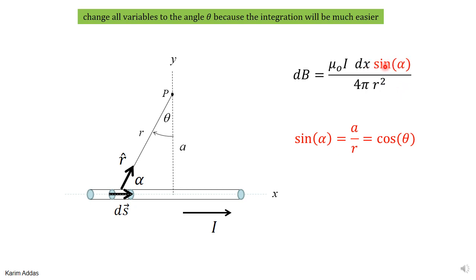Let's start by writing α in terms of θ. From the triangle, sin α equals the opposite side (distance a) over the hypotenuse (r), so sin α = a/r. But cos θ is also a/r. Therefore sin α = cos θ. This is very easy to work with, so we have no problem with the sin α term.